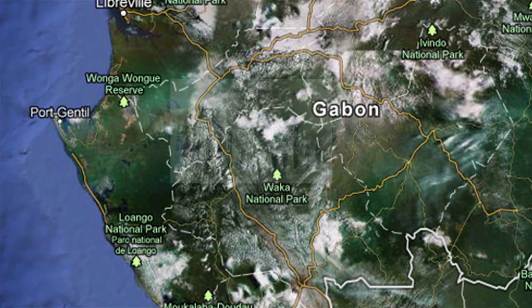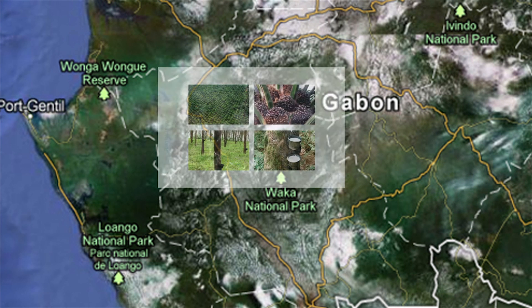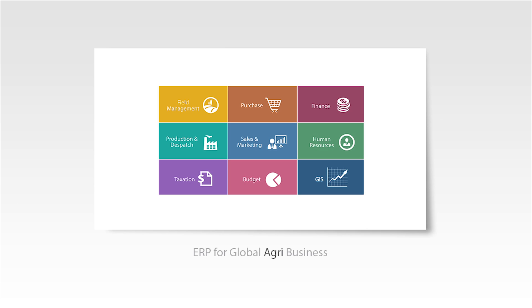Panagro generates and uses heat maps to help predict yields for any estate. Panagro is an ERP solution that helps you better manage all of your business needs as well as your external supply chain.